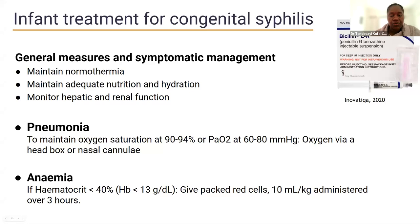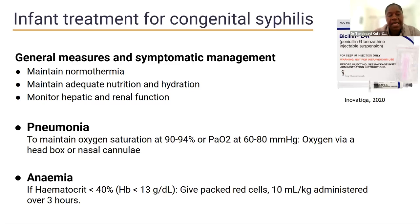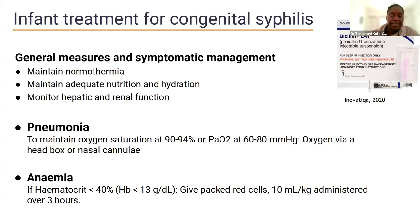In addition to specific treatment with benzathine penicillin, these children should also get general supportive measures depending on presenting features. If they are hypothermic, we need to keep them warm. They need to be hydrated and fed, and hepatic function monitored. Oxygen therapy if they have pneumonia; they may need a transfusion if they have anemia, because they are generally very ill children.